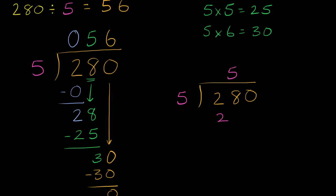Five times five is 25. Subtract. 28 minus 25 is three. Bring down the zero. Five goes into 30 six times. Six times five is 30. And we have nothing left over.